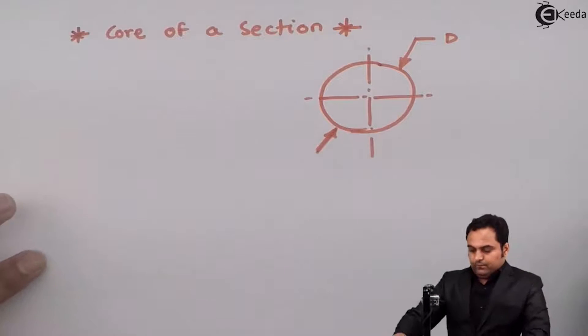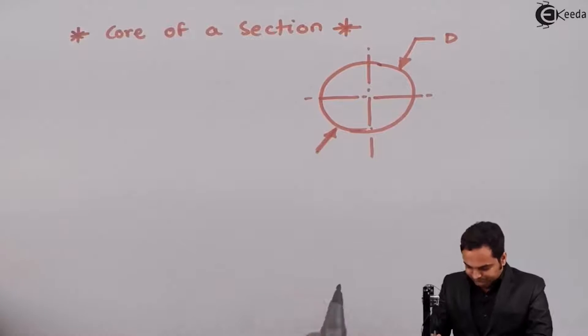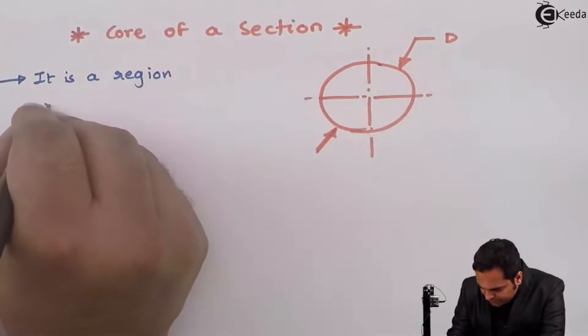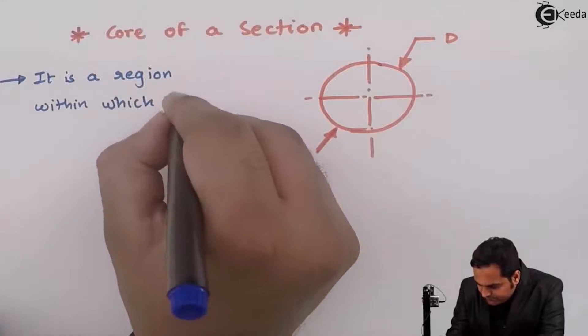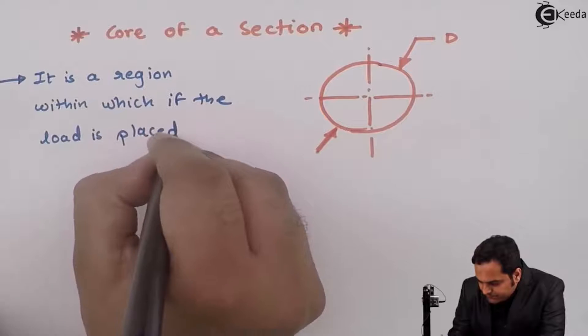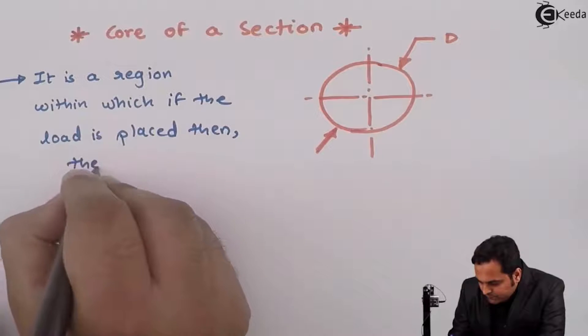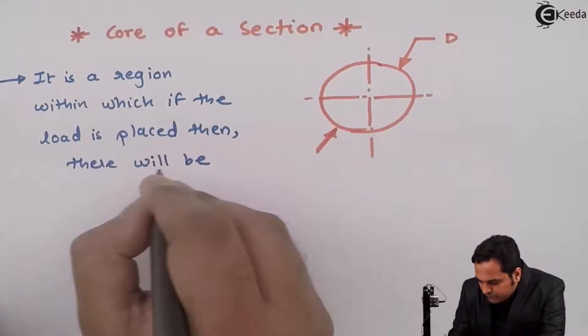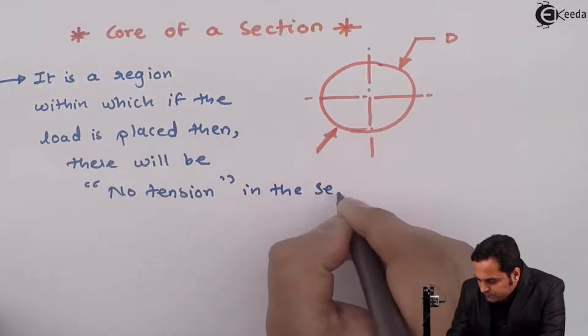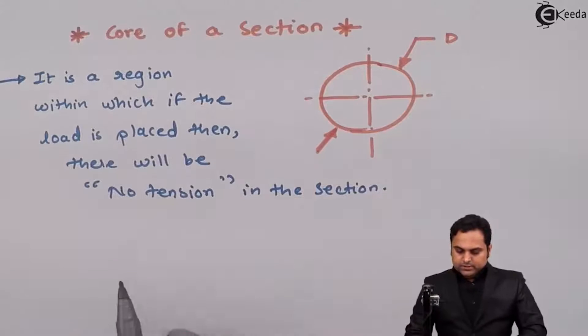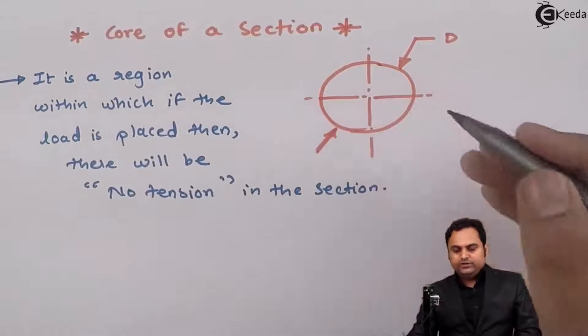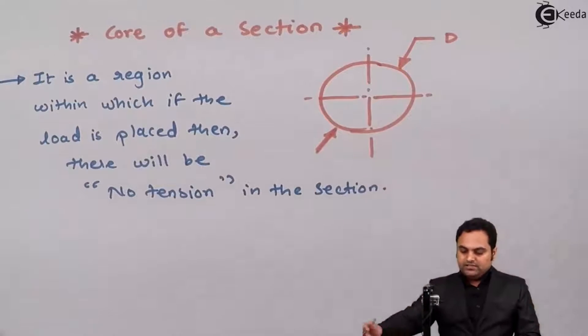Core of a section means it is a region within which if the load is placed, then there will be no tension in the section. It is a region or an area within which if we are placing the load, there will be no tension in the section.